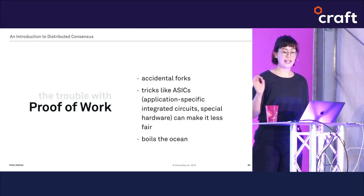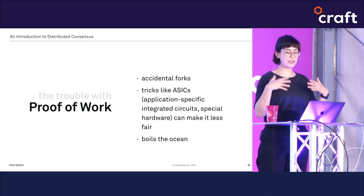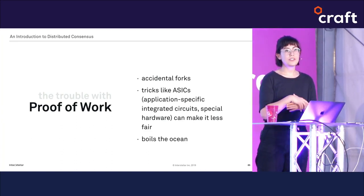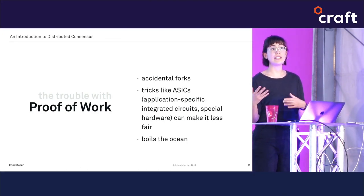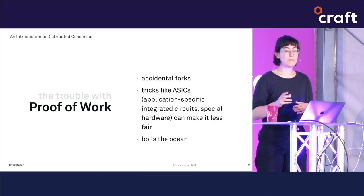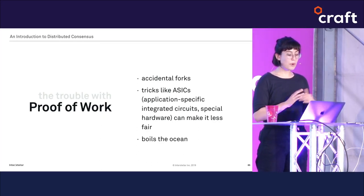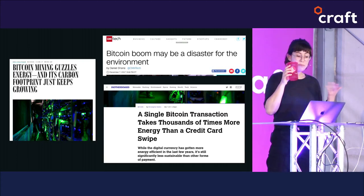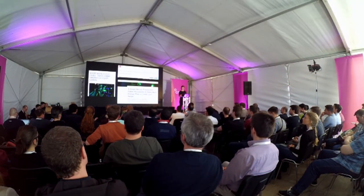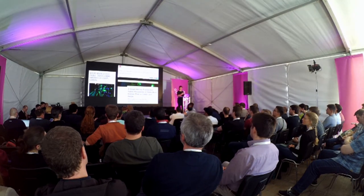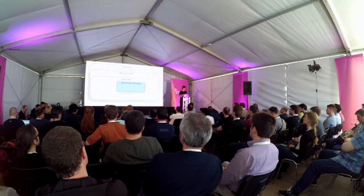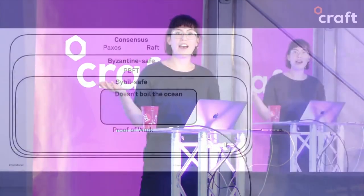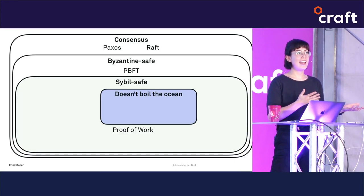But there are still practical problems. One comes in the form of tricks like ASICs that nodes can use to increase their hash power and, by extension, increase the likelihood that they get to propose the next block. Not every proof-of-work blockchain is vulnerable to this, as it depends on the specific hash function, but it does make consensus rounds less fair. And more importantly, proof of work is just infamously expensive to run — all those articles about Bitcoin ruining the environment are based on the energy needed to calculate and recalculate all those hashes.